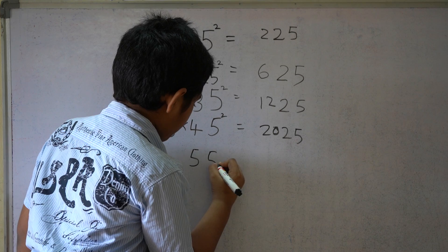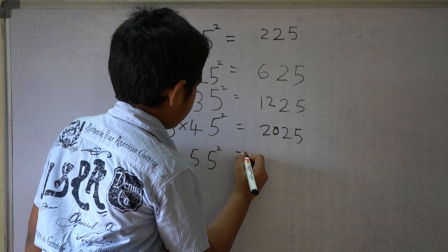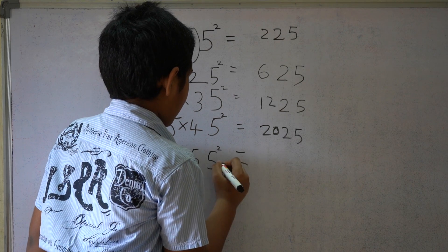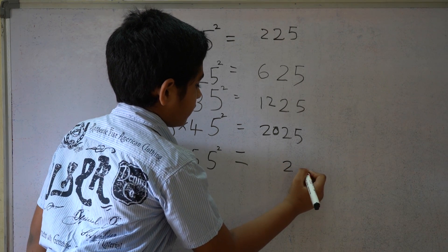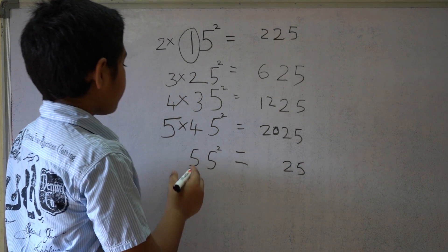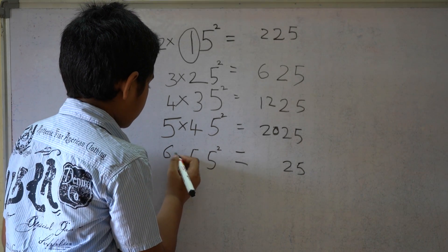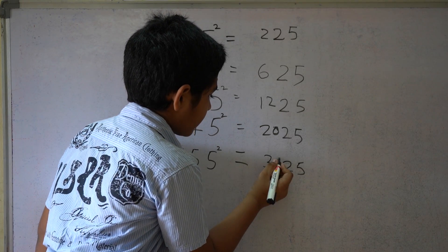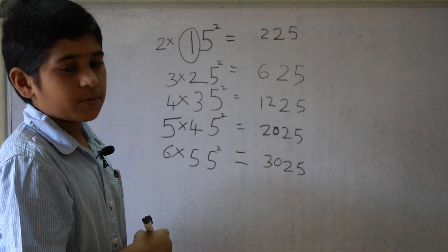55 square. 5 square equals 25. 5 times the next natural number 6 equals 30. So 3025.